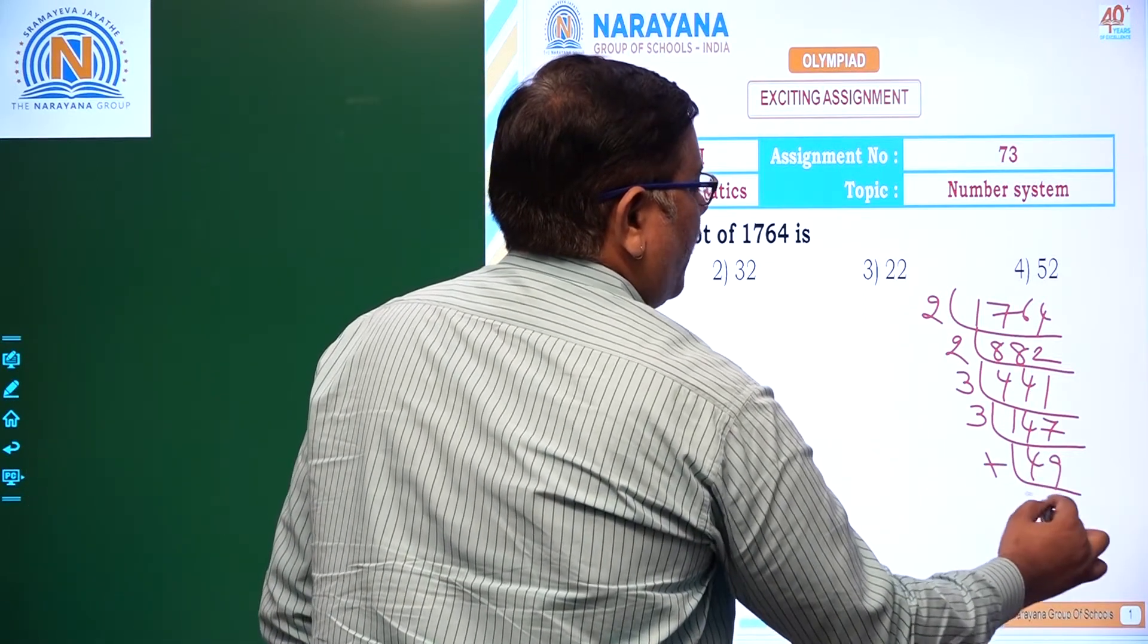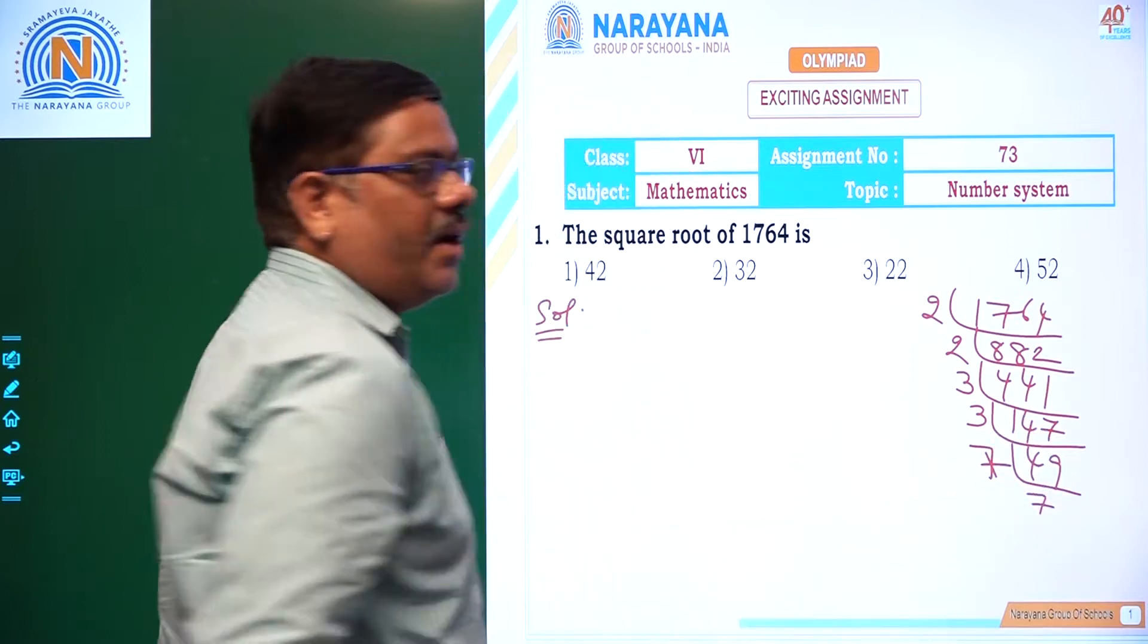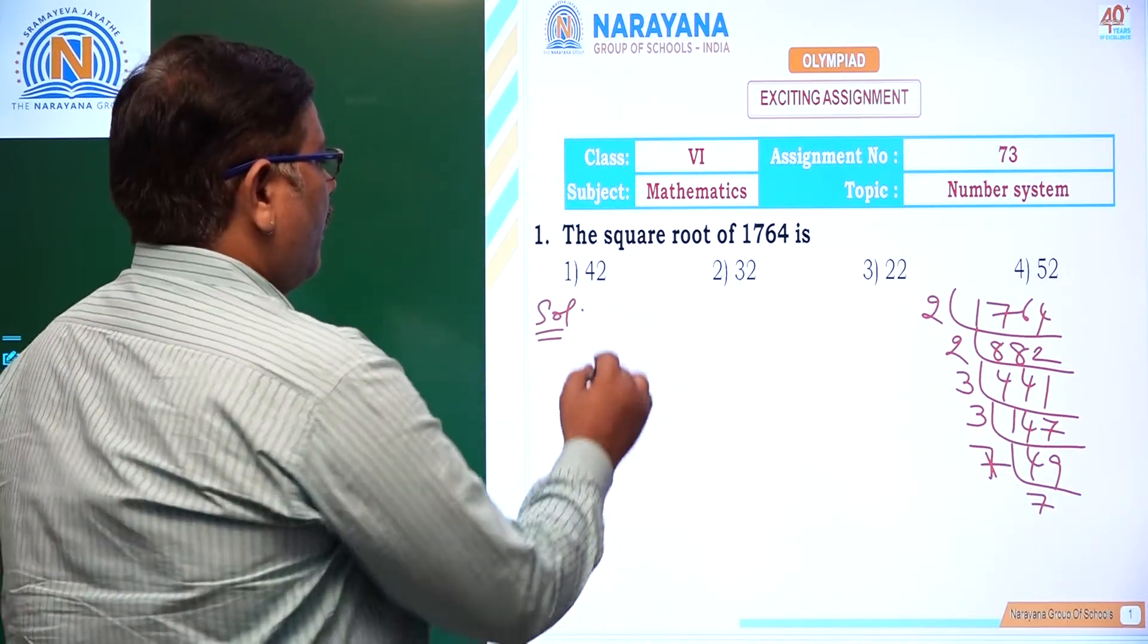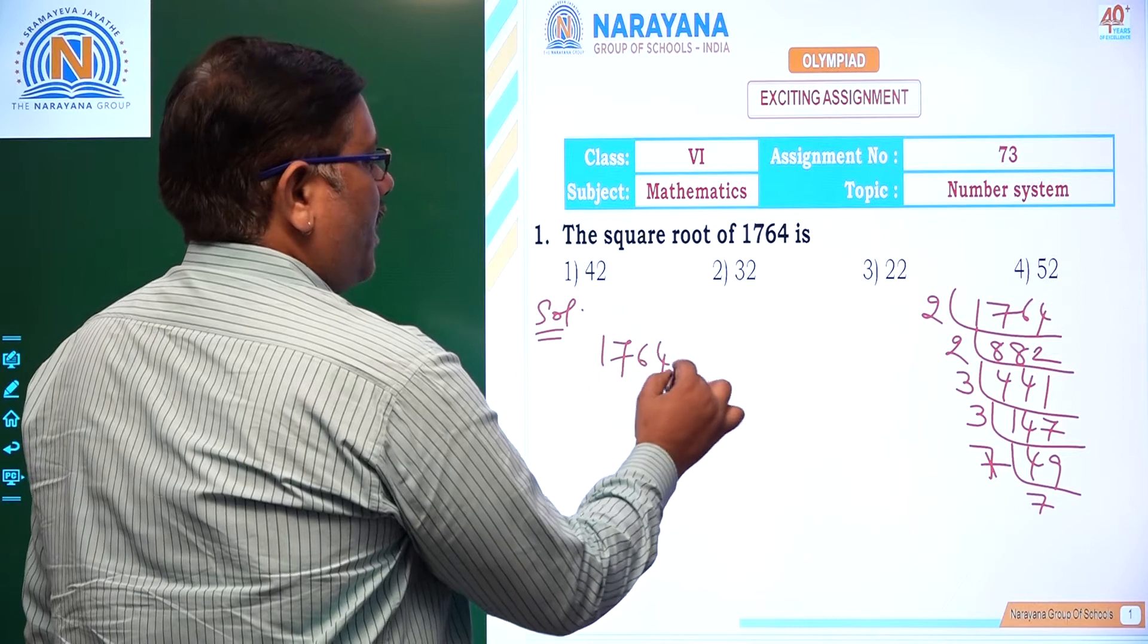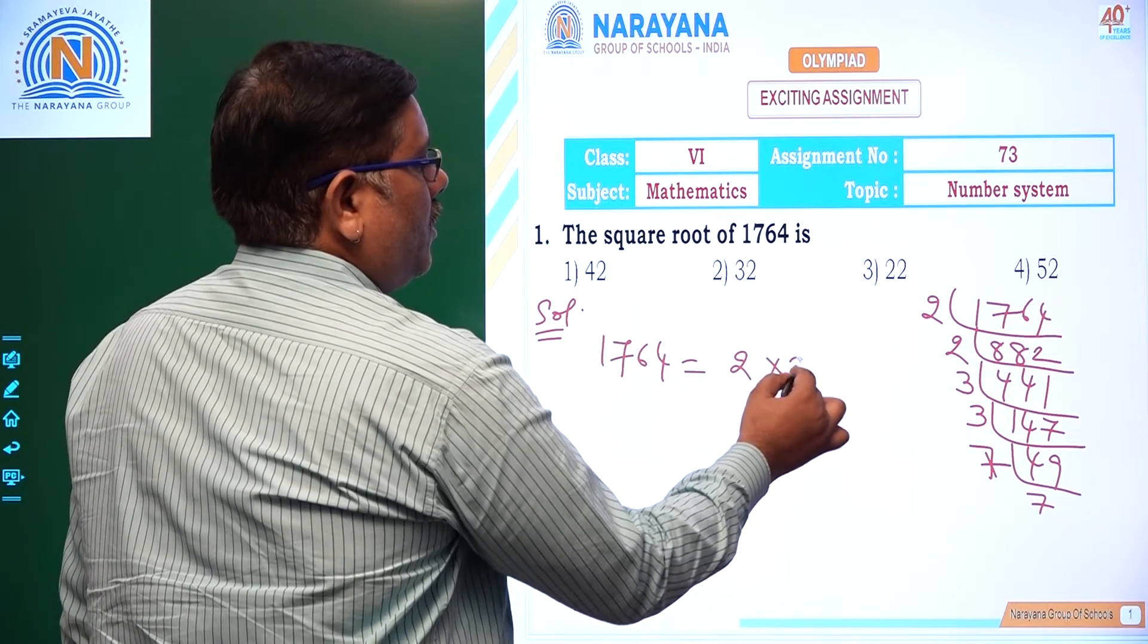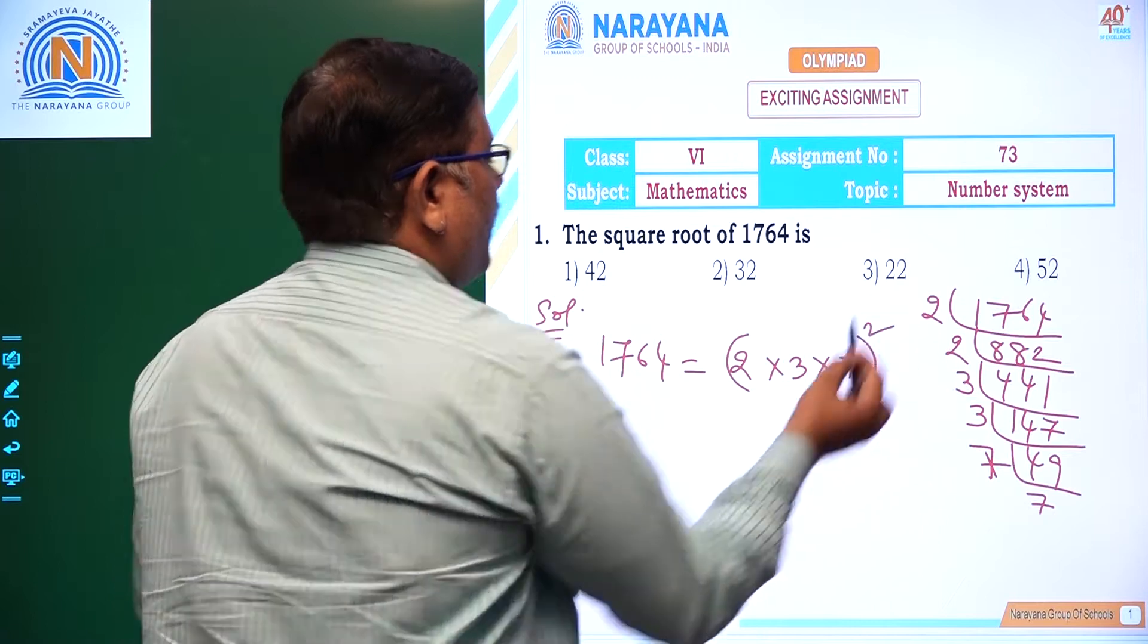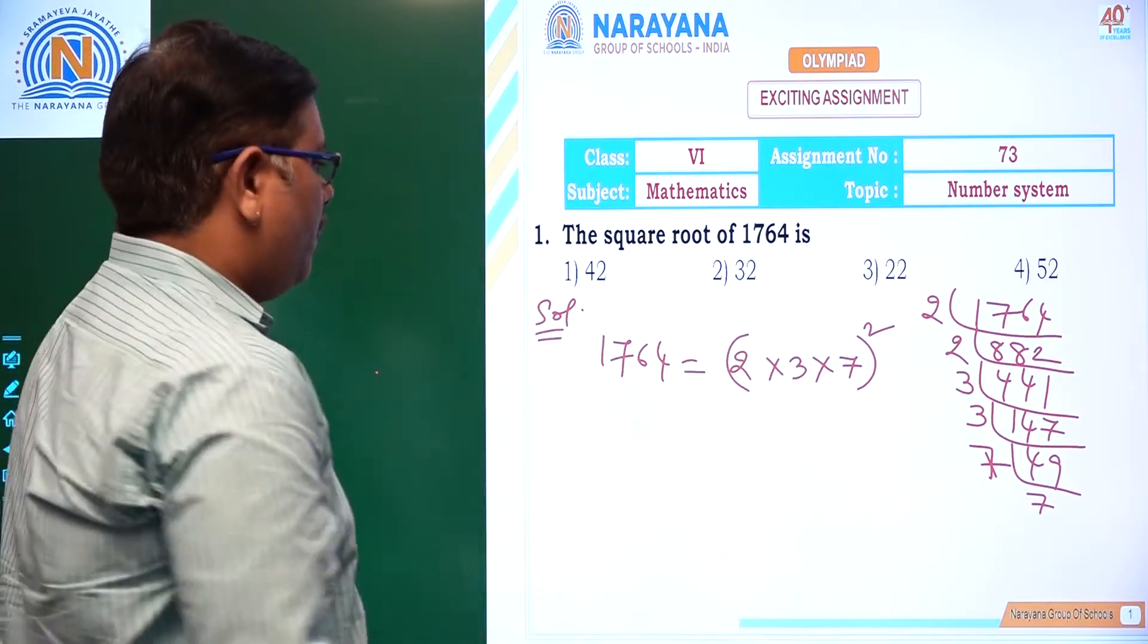49 is a square of 7, so 7 square. 7 into 7. So here, 1764 we can write as 2 into 2 into 3 into 3 into 7 into 7. That's 2 square, 3 square, 7 square.